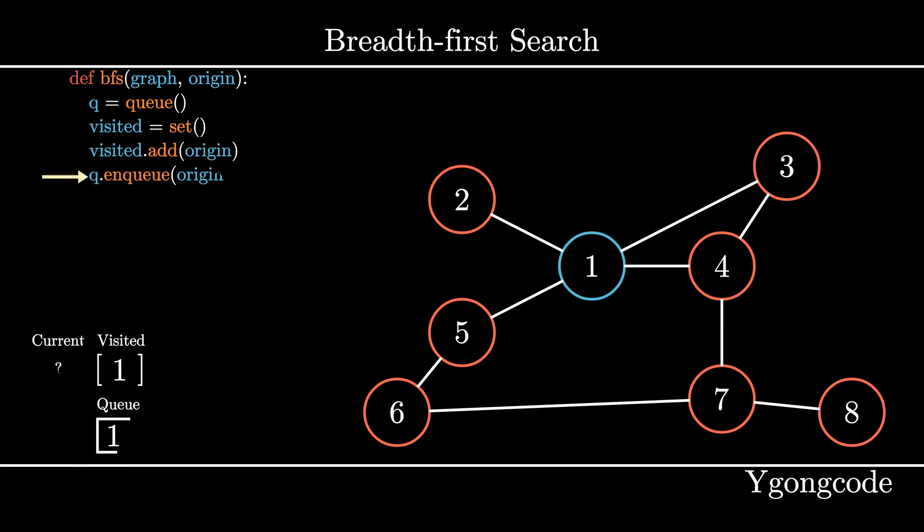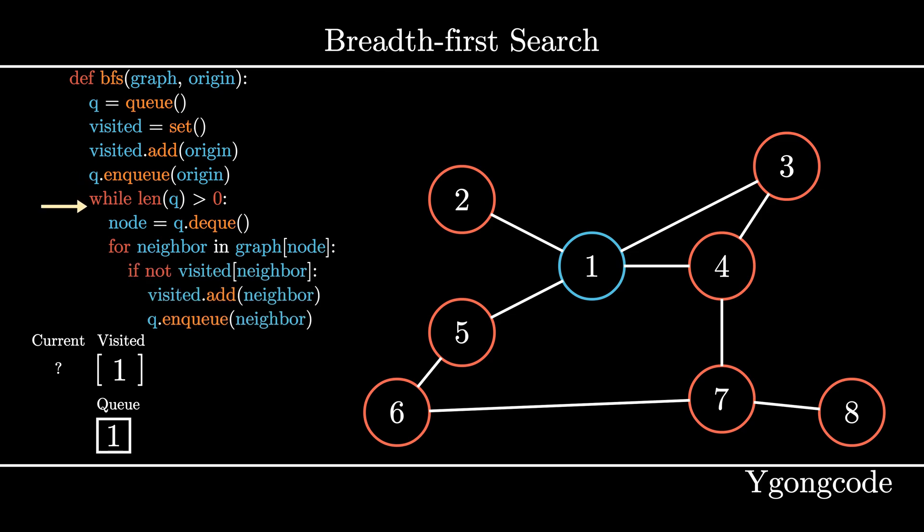We mark our starting node as visited by adding it to the set and also push it to the queue. While the queue is not empty, we pop the node from the front of the queue. At this point, we can also do further processing on the node if we wish to do so.